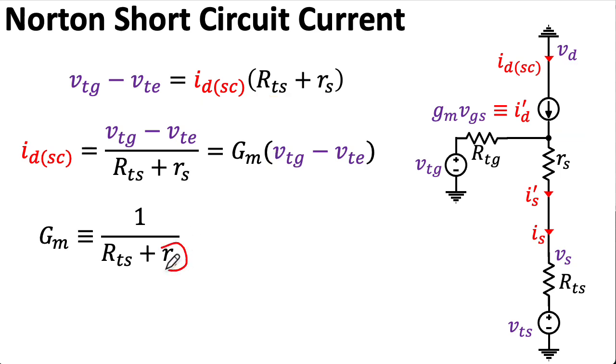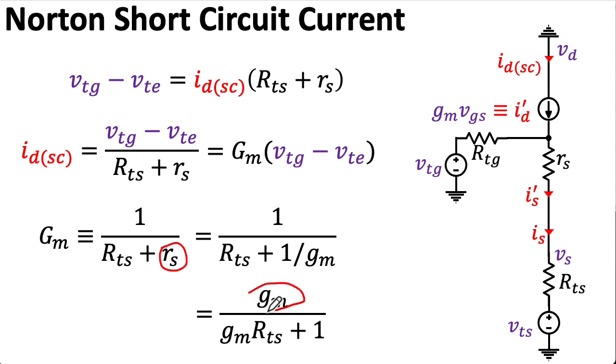Recall that we can write our dynamic source resistance, little RS, as 1 over GM, the transconductance. And if I multiply the numerator and the denominator by GM, I get this expression. Now, notice that as GM becomes bigger and bigger, then this big GM looks more and more like 1 over RTS. So the exact detail about what GM itself actually is, doesn't much matter if you have a resistance RTS here, as long as GM is large.